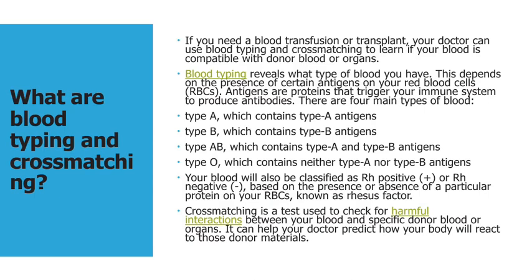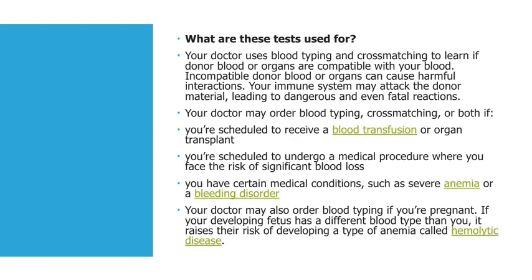Cross matching is a test used to check for harmful interactions between your blood and a specific donor's blood or organs. It can help your doctor predict how your body will react to donor materials. Your doctor uses blood typing and cross matching to learn if donor blood or organs are compatible with your blood.